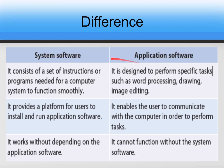Now let's look at the difference between application software and system software. In this slide you can clearly see the comparison. System software consists of a set of instructions or programs needed for a computer system to function smoothly, whereas application software is designed to perform specific tasks such as word processing, drawing, and image editing. System software helps in the smooth functioning of the computer system.